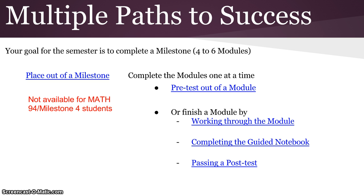The first option to consider is placing out of a milestone, which is available for Math 91, 92, and 93, but not for Math 94.